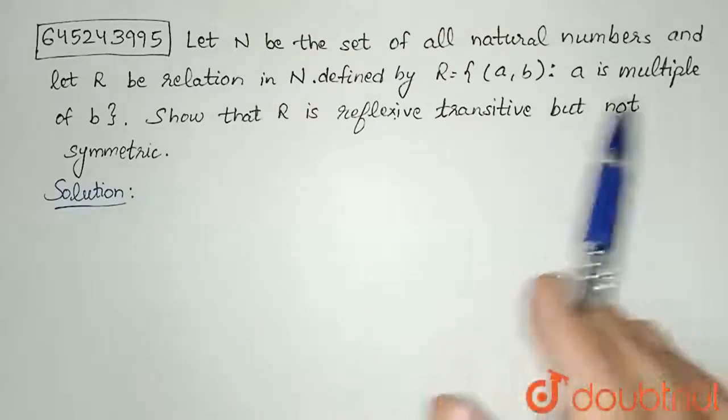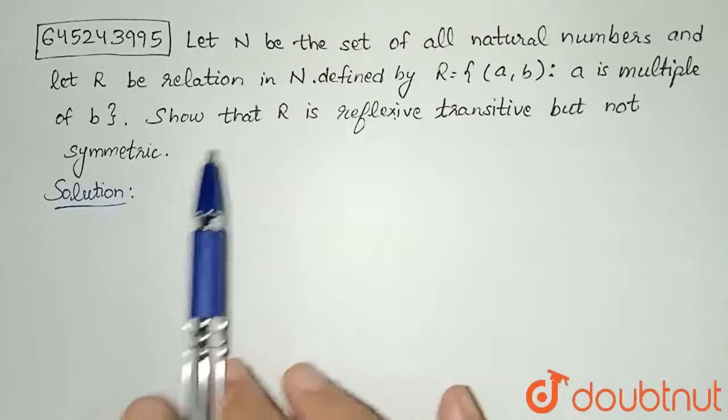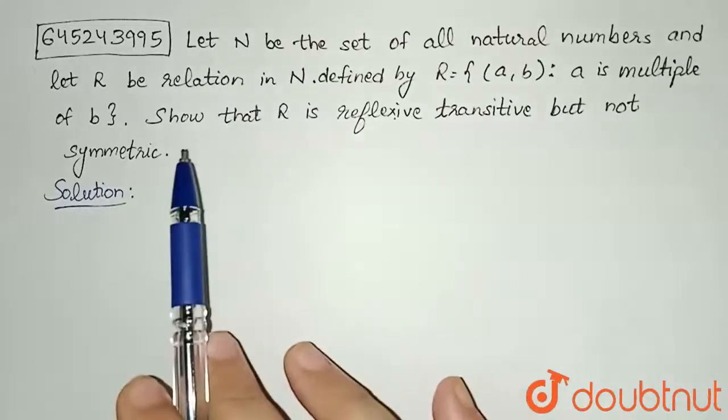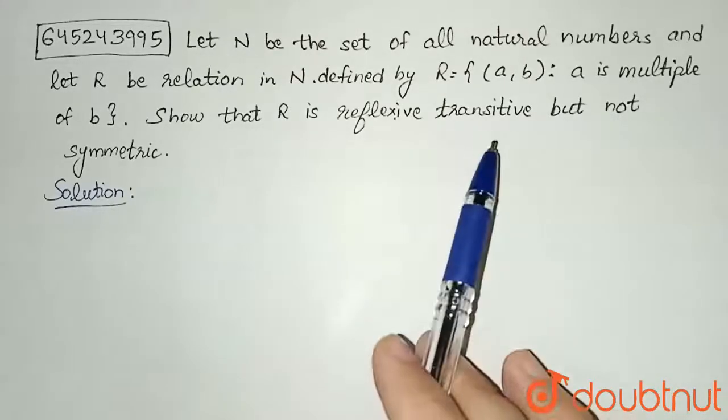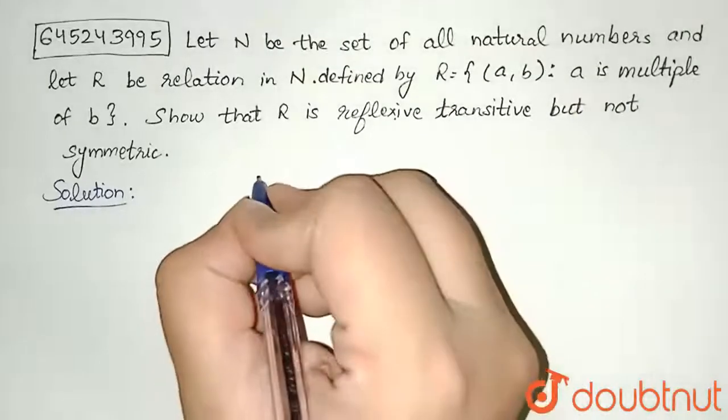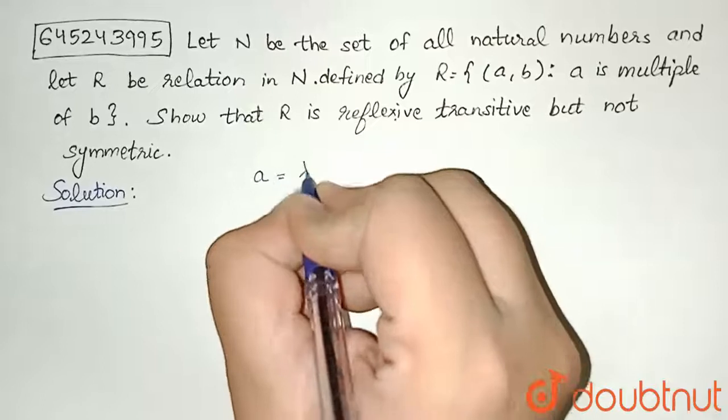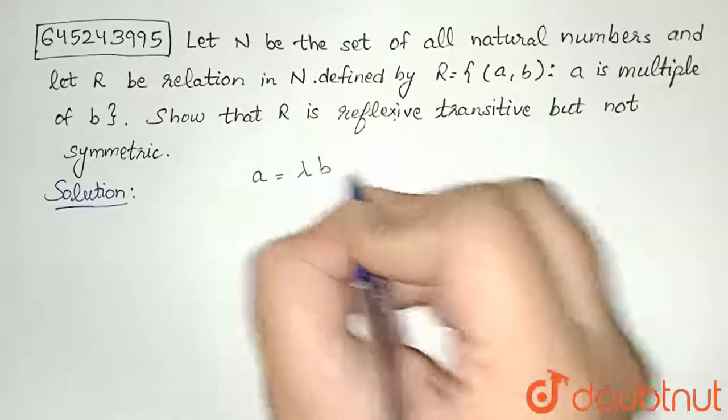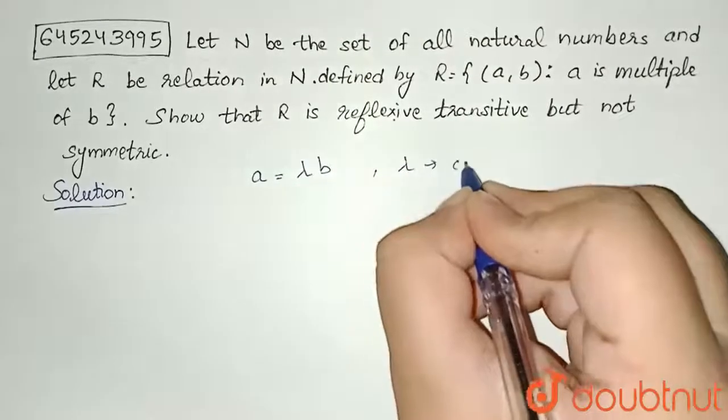So we are given a relation 'a is multiple of b' defined on the set of natural numbers N and we need to prove that R is reflexive, transitive but not symmetric. What is meant by a is multiple of b? We can write it as a equals lambda times b, where lambda is some constant.